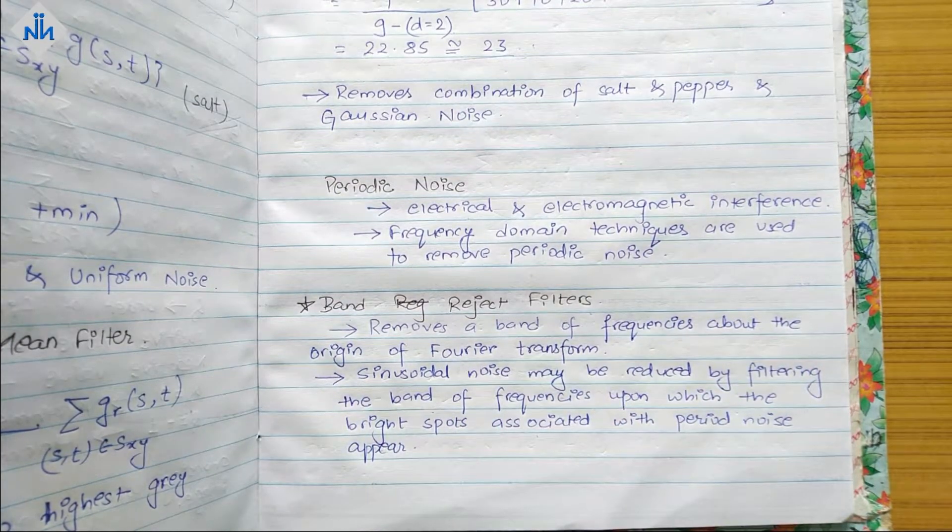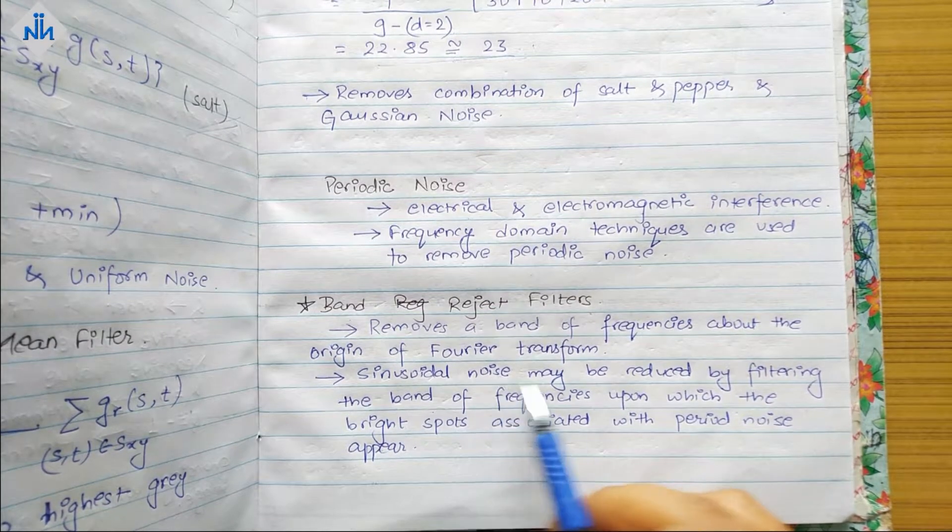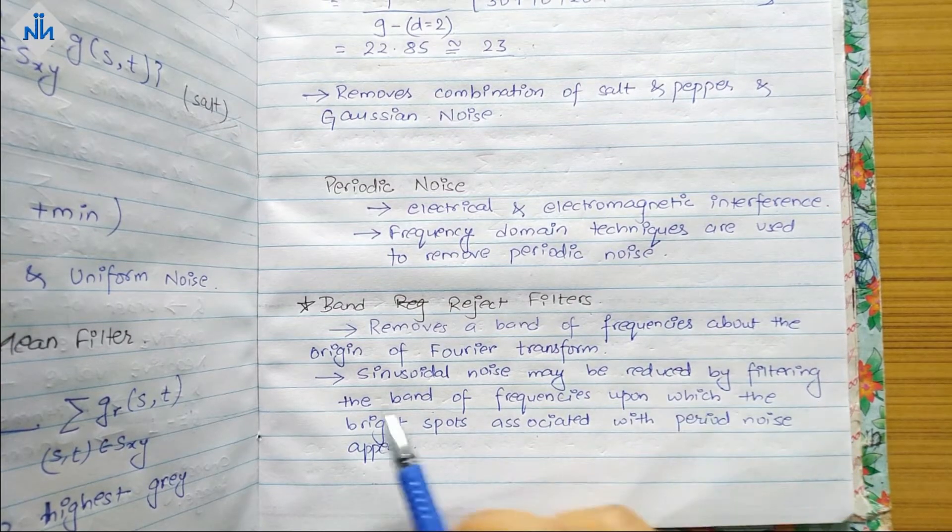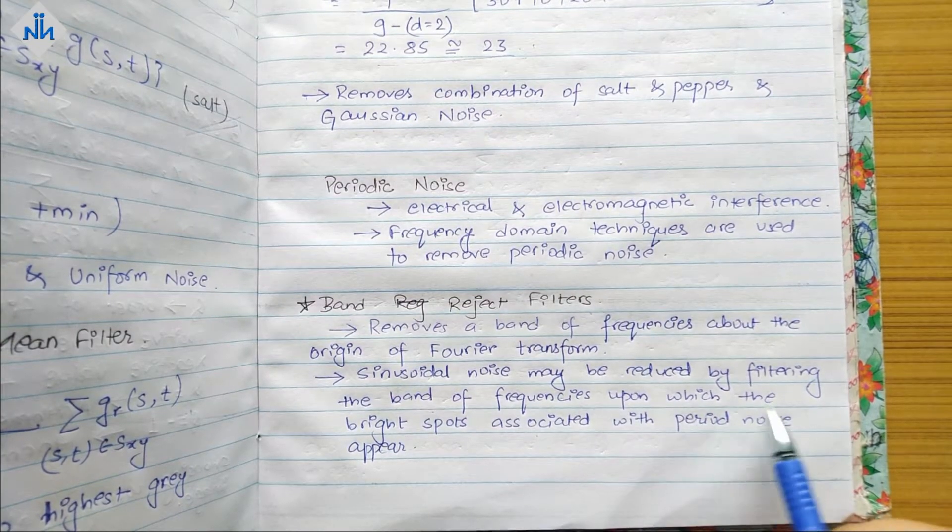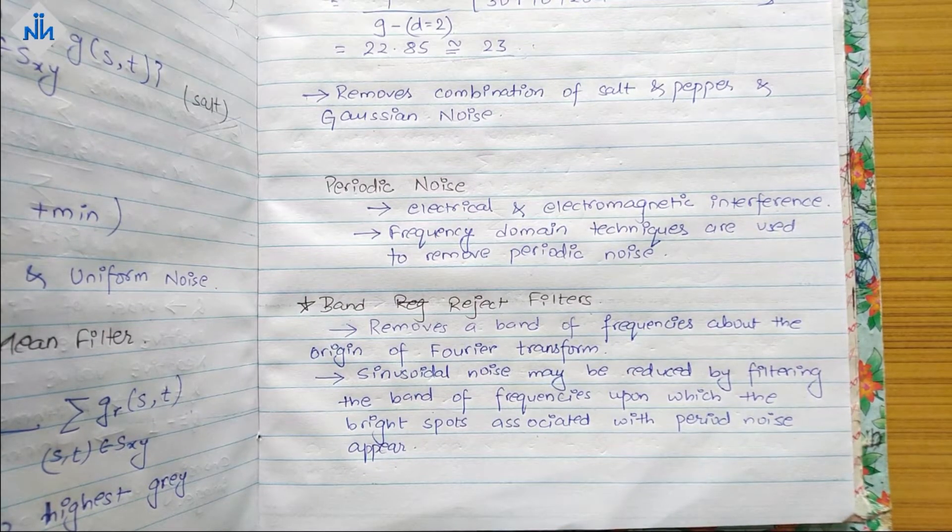We have a Fourier transfer and it removes the band of frequency about it. Sinusoidal noise may be reduced by filtering the band of frequencies upon which bright spots associated with periodic noise appear. This is what band reject filter is used for.